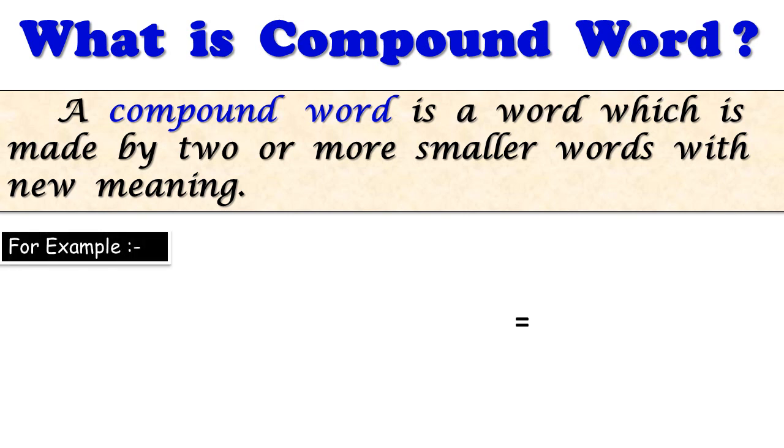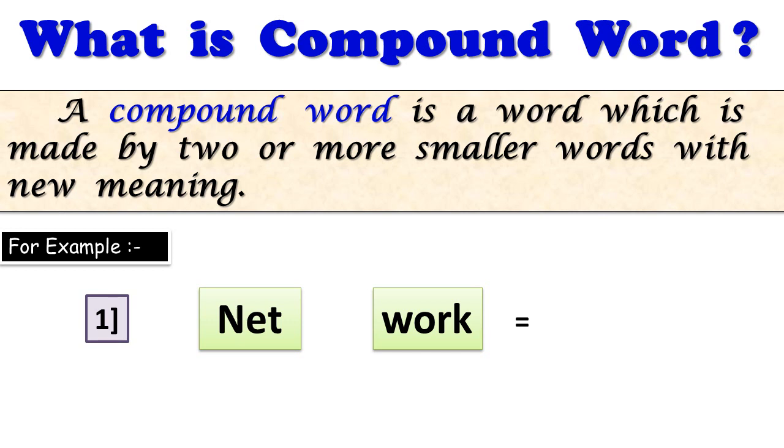For example, one word is net and another word is work. These are two different type of words but when they come together, they create a new word that is network.